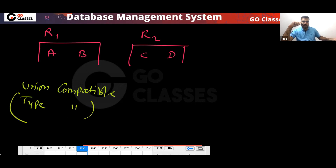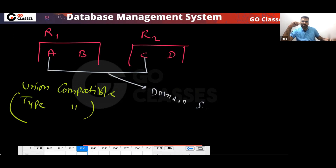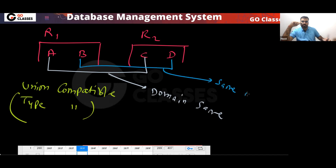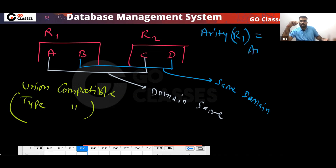When can we say two relations are union compatible or type compatible? When the attributes have the same domain — the name can be different, but they must have the same domain. Also, the number of attributes, i.e., the arity of R1, should be the same as the arity of R2. This is the definition of union compatibility.